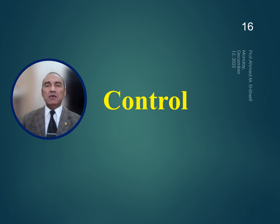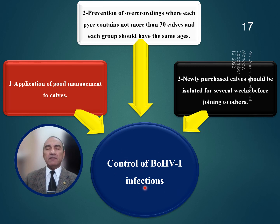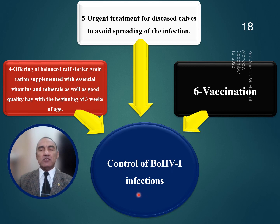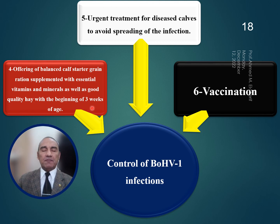Control of Infectious Bovine Rhinotracheitis. Control of bovine herpes virus 1 infections follows these steps. Number one: application of good management in calves. Number two: prevention of overcrowding, where each pen should contain not more than 30 calves, and each group should have the same ages and come from the same environment. Number three: newly purchased calves should be isolated for several weeks before joining the existing herd. Number four: offering balanced calf starter grain with essential vitamins and minerals, as well as good quality hay beginning at the third week of age. Number five: urgent treatment for diseased calves to avoid spreading of the infection. Number six: vaccination.